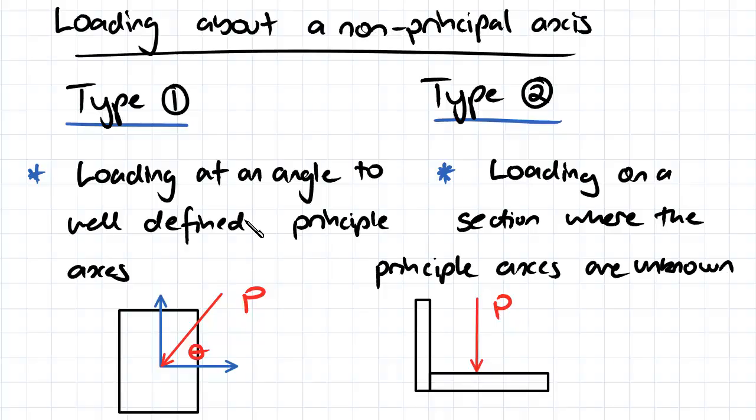One might be when we've got a force at some angle to the principal axes. So we've got a simple shape, a rectangle here, so you know where the principal axes are. They're just going to line up with the axes of symmetry, but your loading is in a way that you're going to have some component affecting both of your second moments of area about both the y and the x axis.